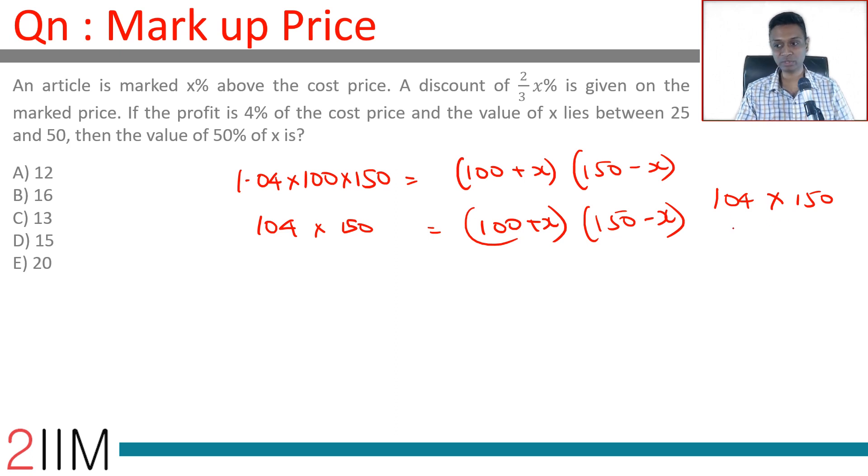You can write this as 52 times 300, 150 minus x. One of the products should be between—it should be less than 150, it should be more than 100. Both numbers are likely to be between 100 and 150. Try to find some combination that works that can fit in both of these.